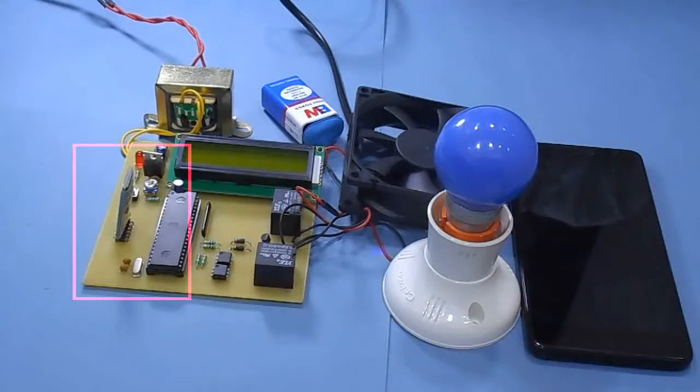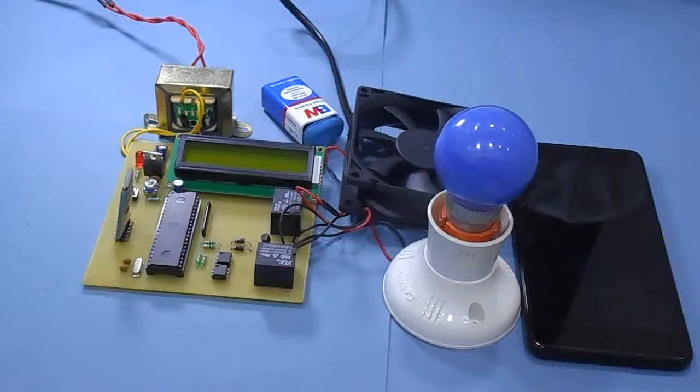Bluetooth device HC05 receives input signal from this Android device. This system is especially beneficial in case of handicapped or aged people who find it difficult to walk and operate the electrical switches.